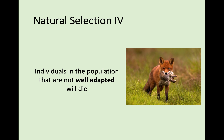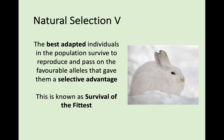Natural selection then takes place. Individuals in the population that are not the best adapted will die off — whether by predation or a change in the environment. On the other side, the best adapted individuals will survive, reproduce, and pass on those favourable alleles — those favourable genes — that gave them a selective advantage. The best adapted organisms survive and pass on the genes that allowed them to survive. This is known as survival of the fittest.